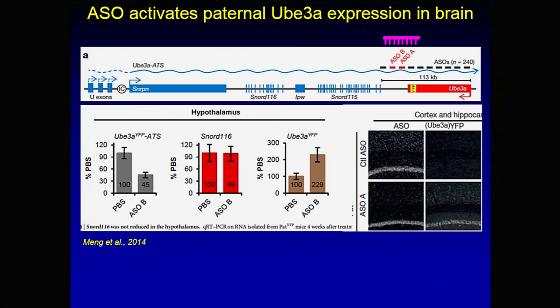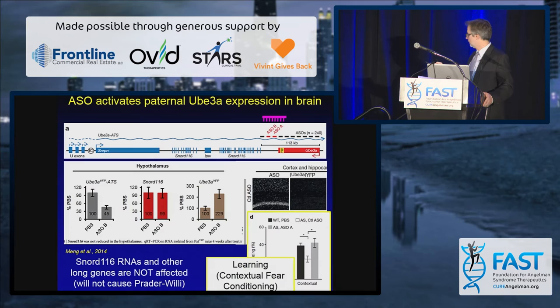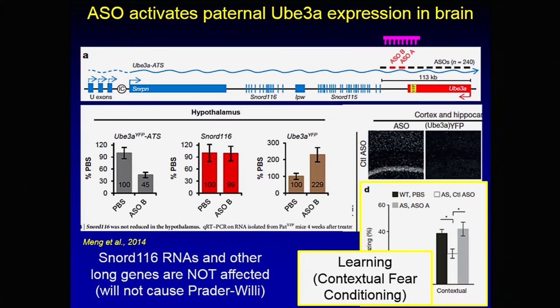They have graphs showing that when they did this, the UBE3A came on and the antisense transcript went down. Importantly, things over here didn't change — that's a very important part of their approach. They were also able to show in their study that they could rescue some of the phenotypes in the mouse model. One of the important ones was the learning phenotype — something called contextual fear conditioning. In wild-type animals that signal looks a certain way; in Angelman mice it's reduced, but after treatment with this ASO it looks a lot more like wild-type.